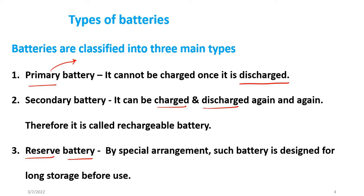When we use the reserve battery, we break the partition, and then we can use the electric current whenever it is needed. That's why they have a special arrangement. Military applications and spacecraft batteries use this type of reserve battery. So these are the three different types of batteries.